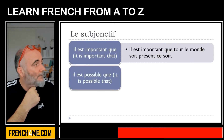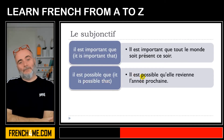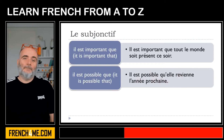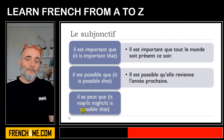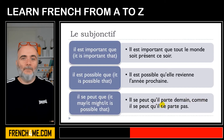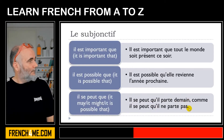Il est possible que — it is possible that. Il est possible qu'elle revienne l'année prochaine. Next: il se peut que — it may, it might, it is possible that. Il se peut qu'ils partent demain comme il se peut qu'ils ne partent pas.